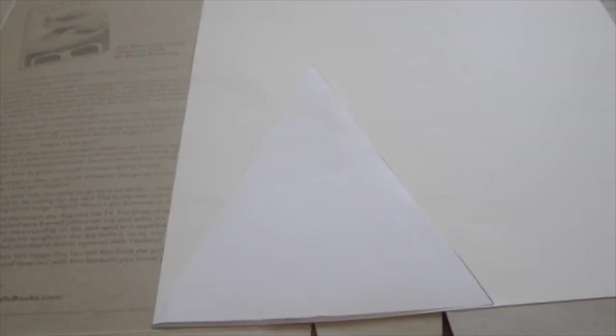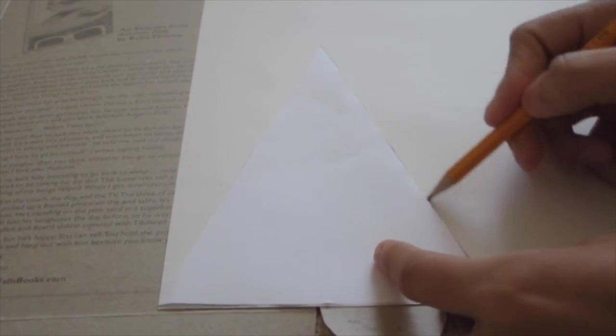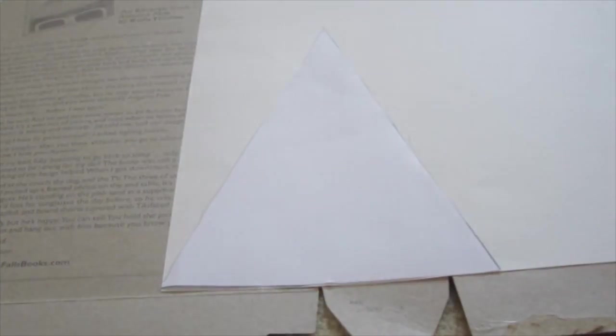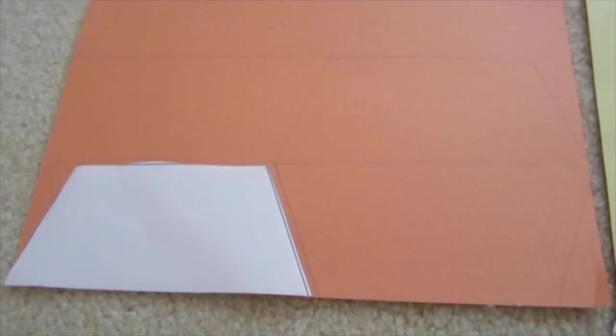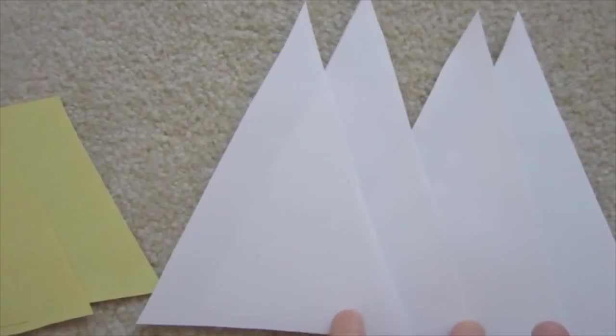Now you want to trace each of the templates onto the colored paper. The triangle goes on the white paper, the smaller trapezoid on the orange paper, and the bigger one on the yellow paper.